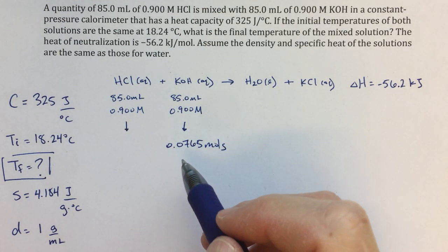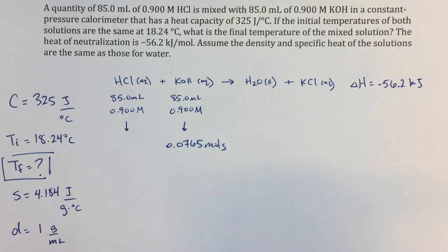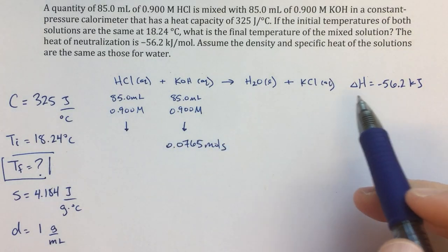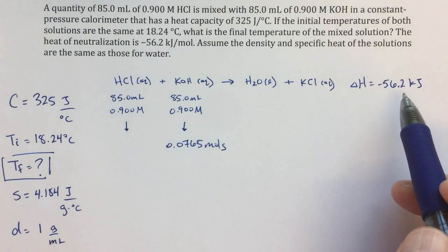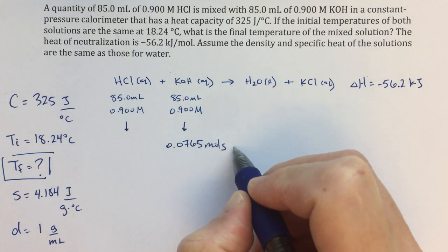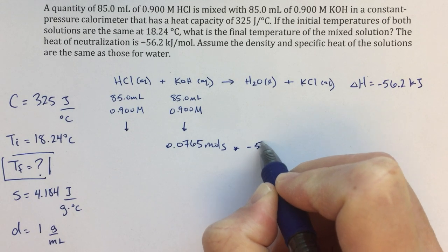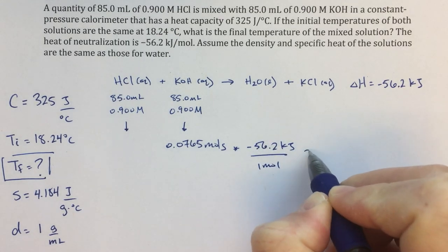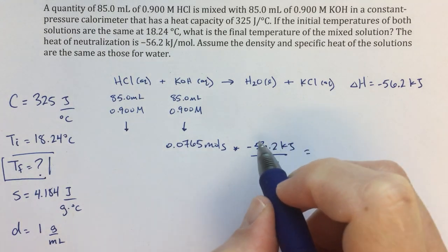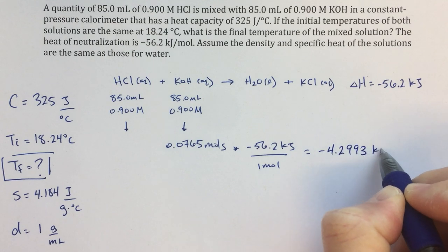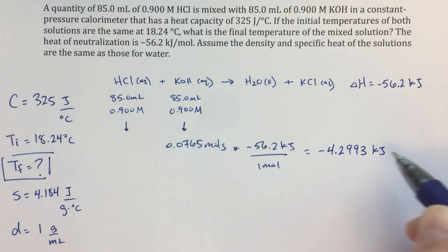And then I'm going to use this information to figure out, well, when I do that mixing, when I mix these two things together, how much energy is going to be released? This minus 56.2 kilojoules, that's per mole. So if I've got 0.0765 moles, then I'm just going to multiply that by minus 56.2 kilojoules over one mole. And that value is going to be minus 4.2993 kilojoules.